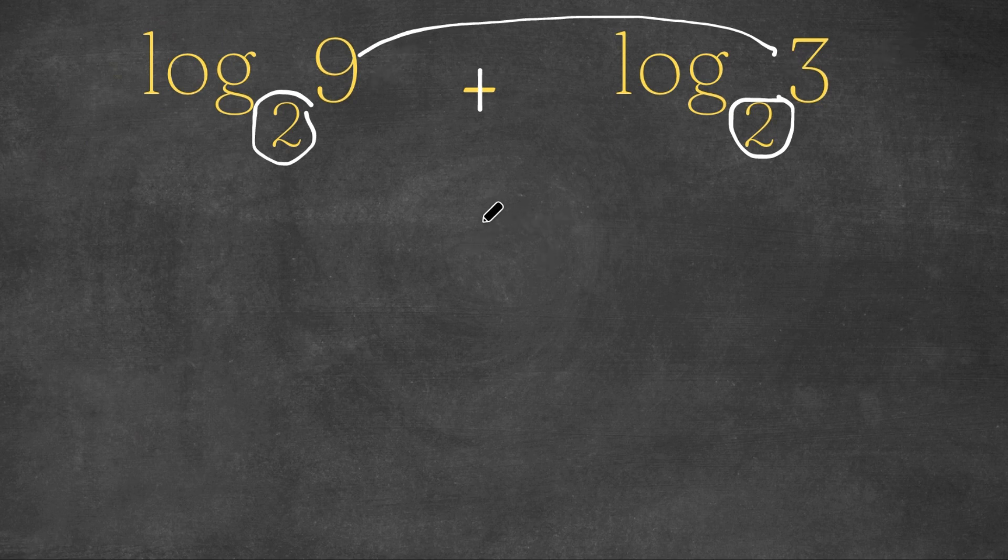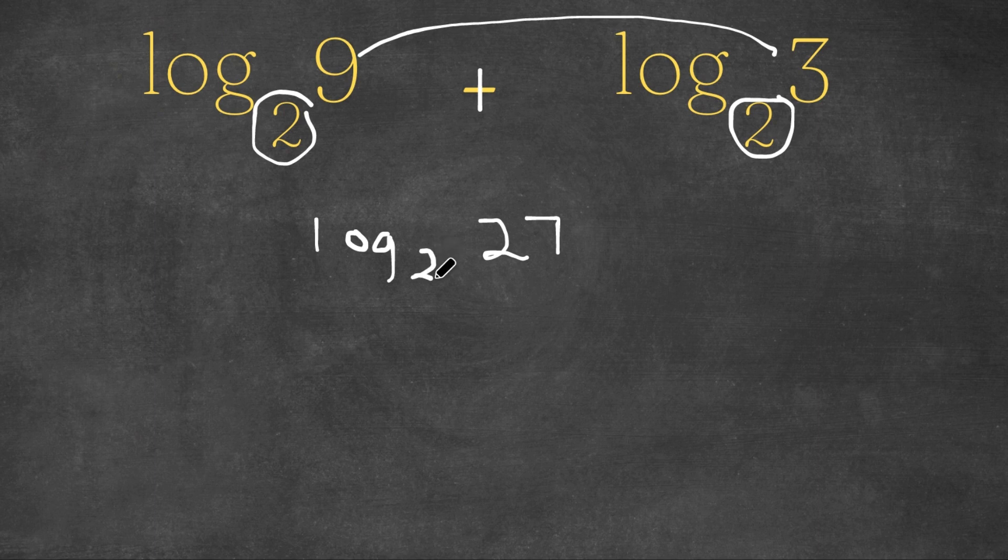And what is 9 times 3? 27. So this would be log base 2 of 27.